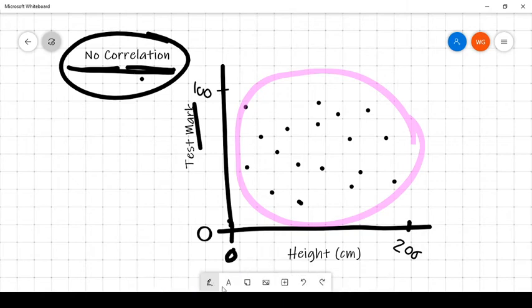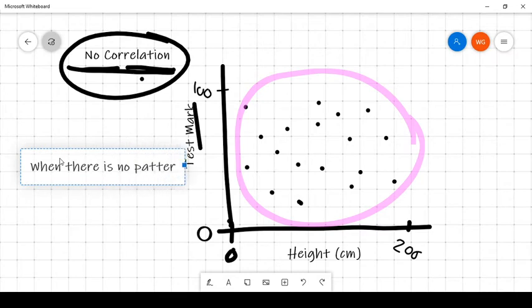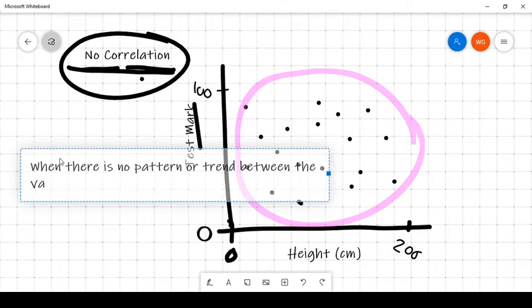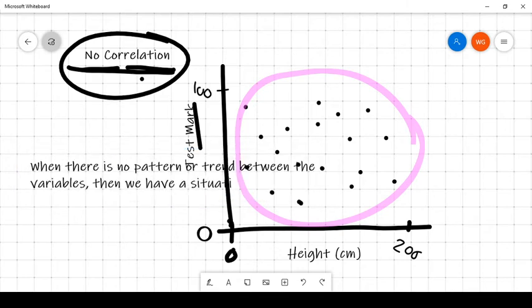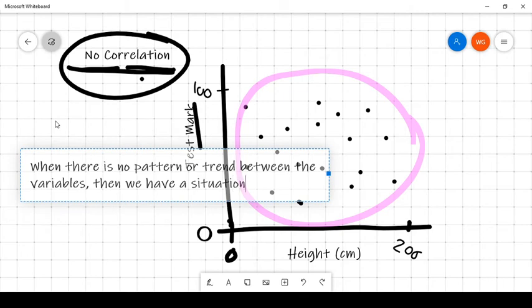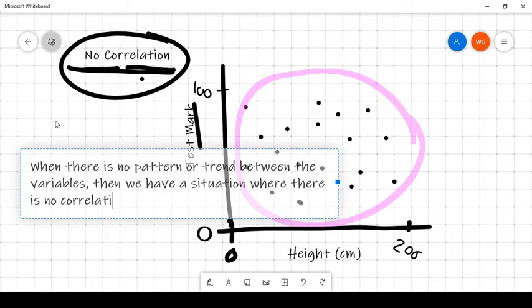We can say when there is no pattern or trend in between the variables, then we have a situation where there is no correlation.